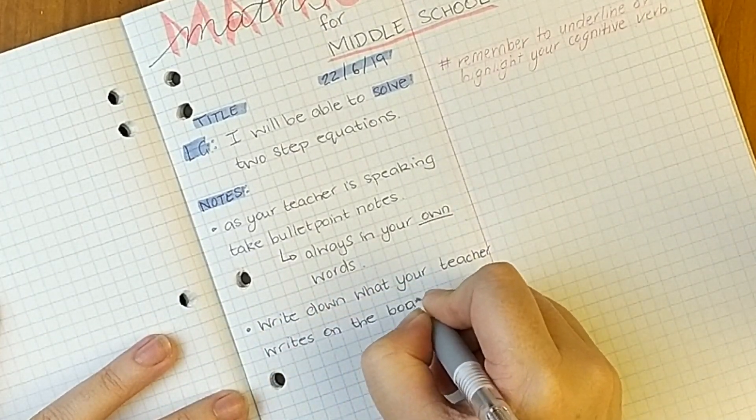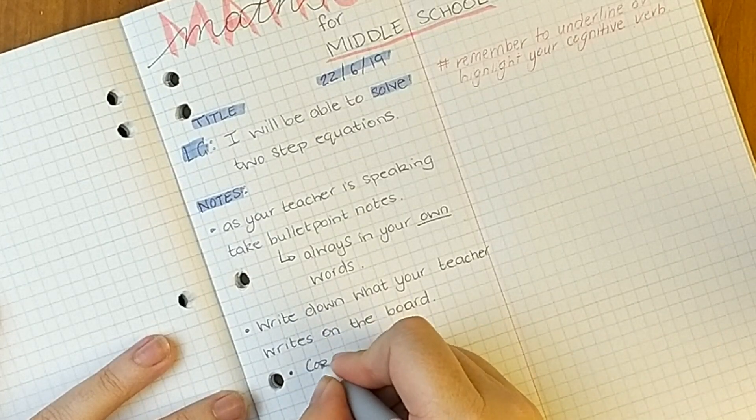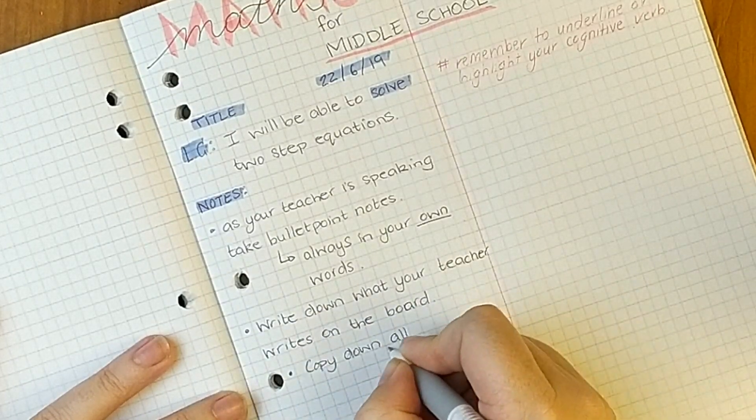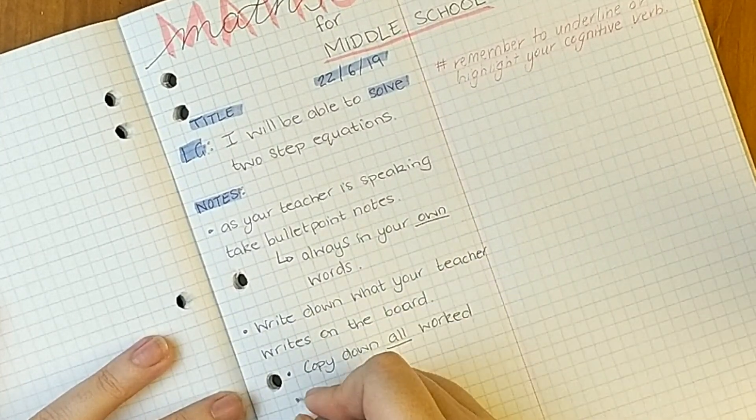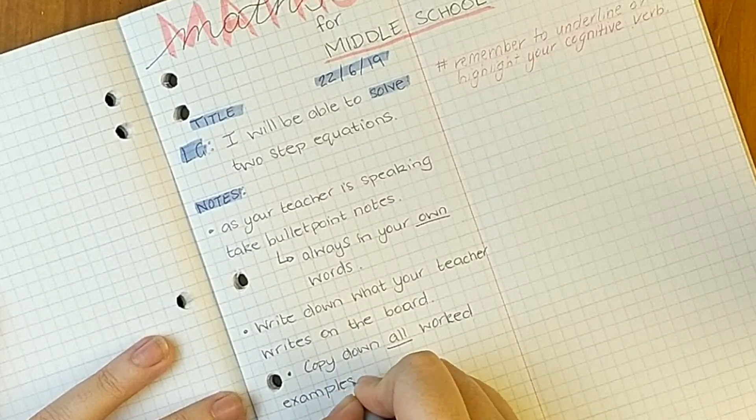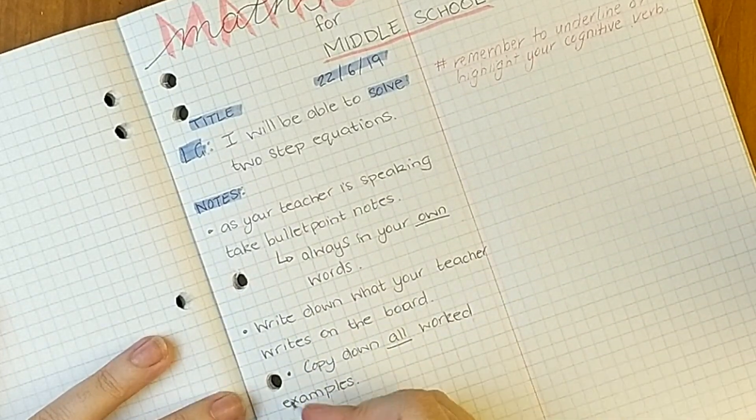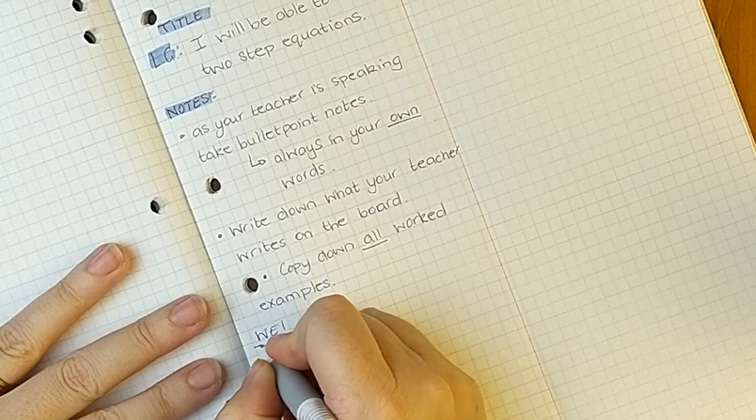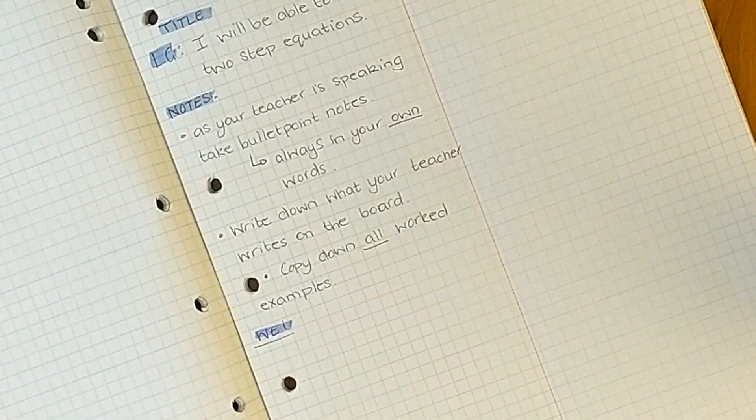For my classes, if I write something on the board it is expected that they're going to copy it down as well. And of course worked examples, very very important. My students always have to write down every worked example on the board exactly how they see it.